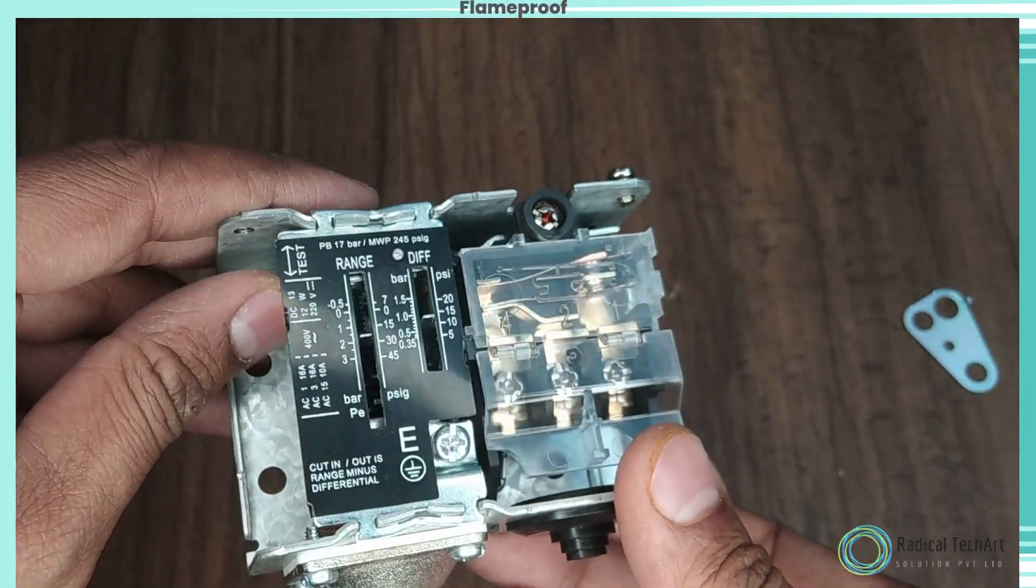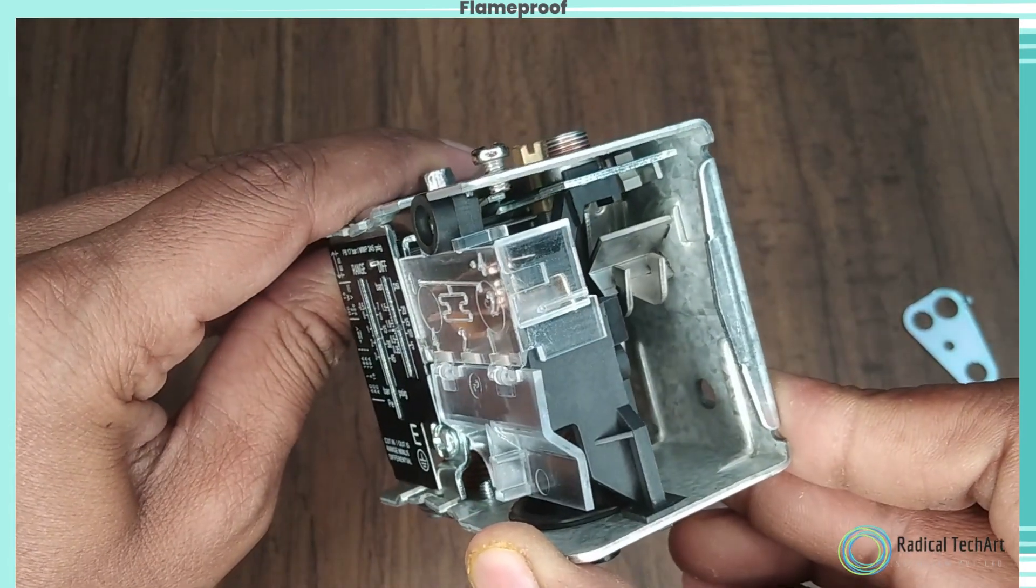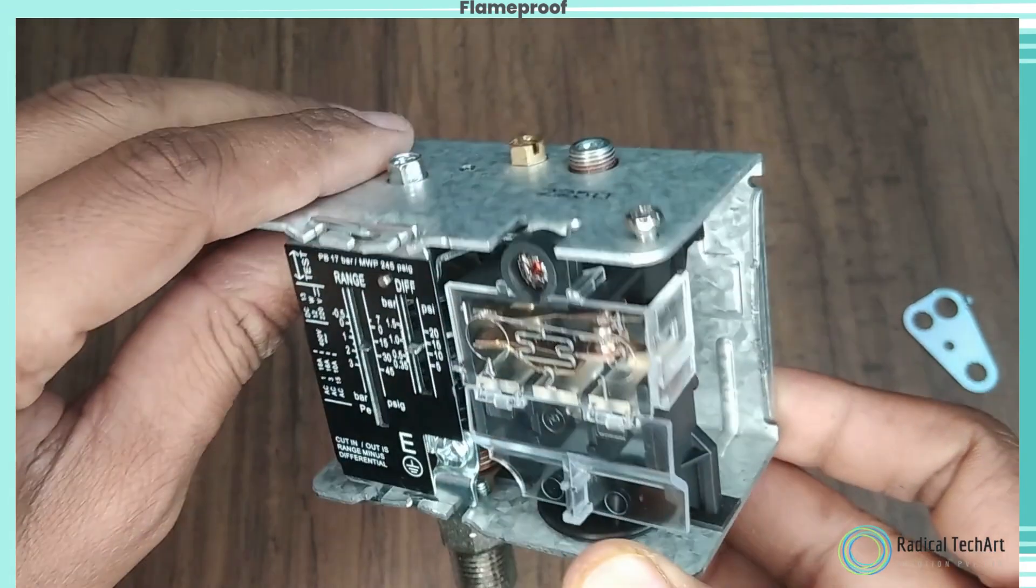Now we will see our relay is working. When setpoint is triggered, our relay will operate like this.